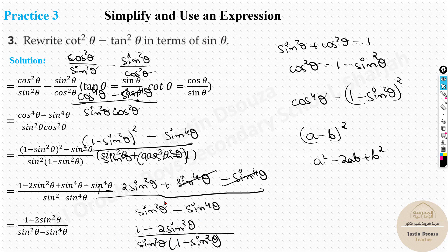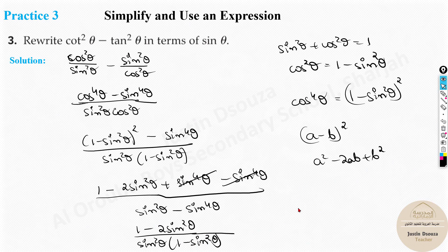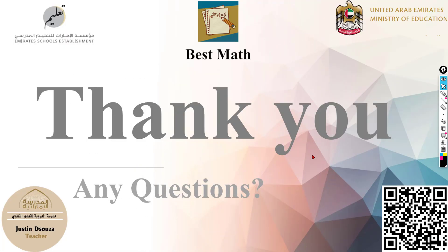The answer can be left at the previous step — the key is getting everything in terms of sine. Once you know the identities and practice applying them, these simplifications become manageable. That's the end of this lesson on trigonometric identities. Please subscribe to the channel, share with friends who might find it helpful, and happy learning — bye-bye for now.